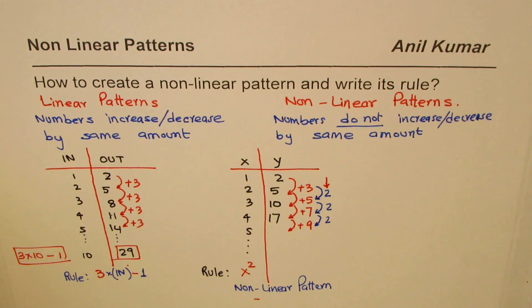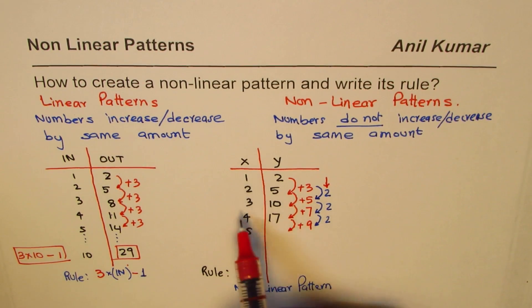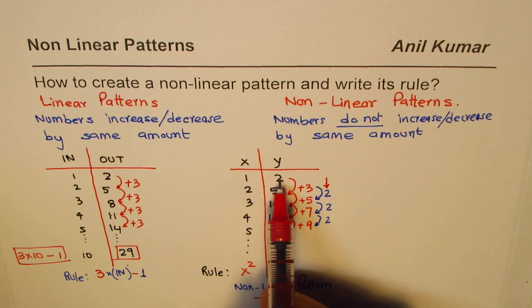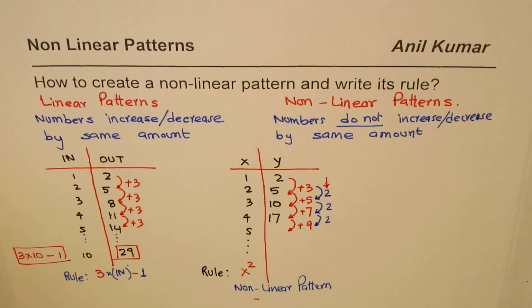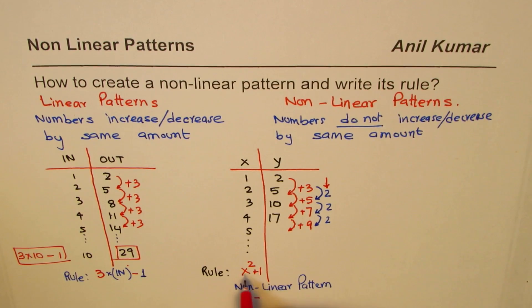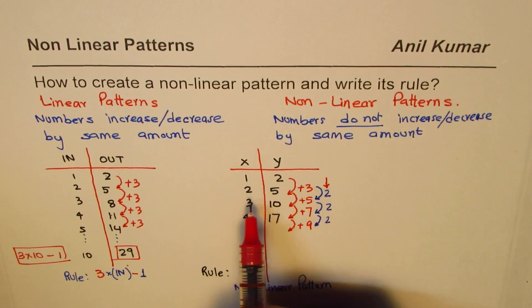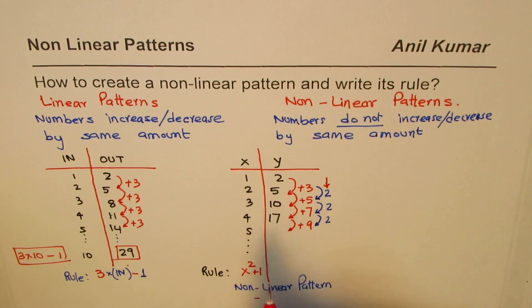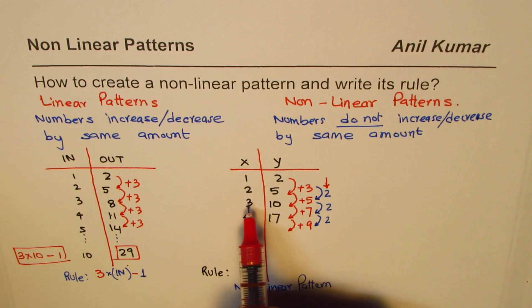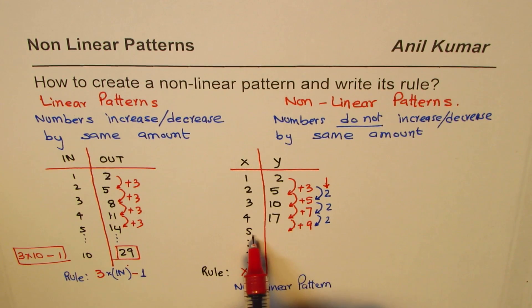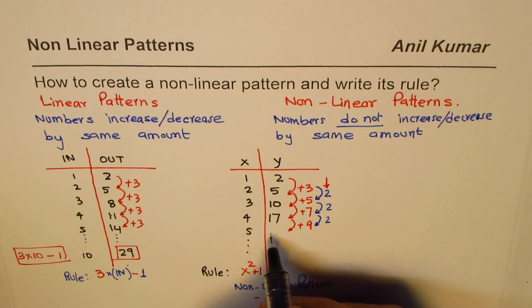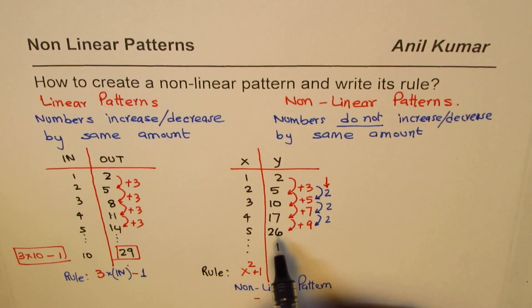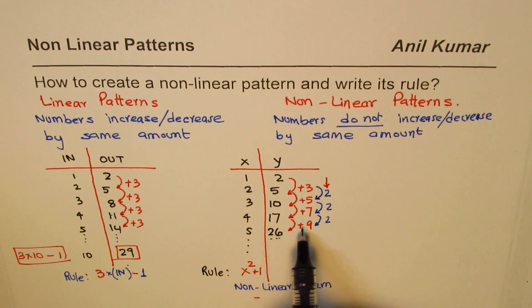One squared is one, but we need two — so we add one. The rule becomes x squared plus one. Check: two squared is four, plus one is five — correct. Three squared is nine, plus one is ten — correct. Five squared is twenty-five, plus one is twenty-six — and seventeen plus nine is indeed twenty-six. It works.